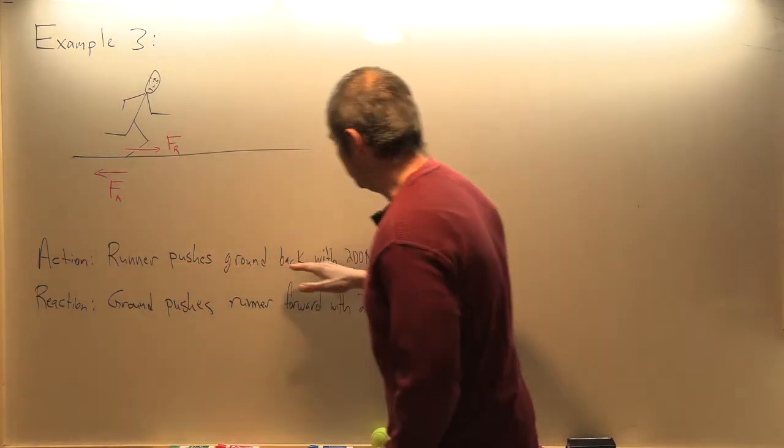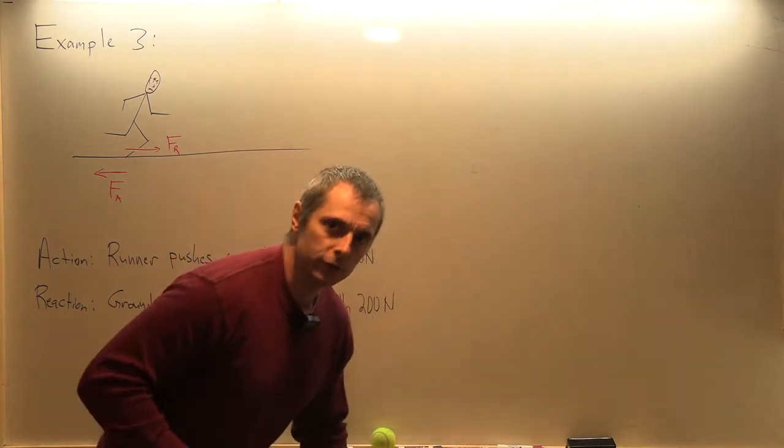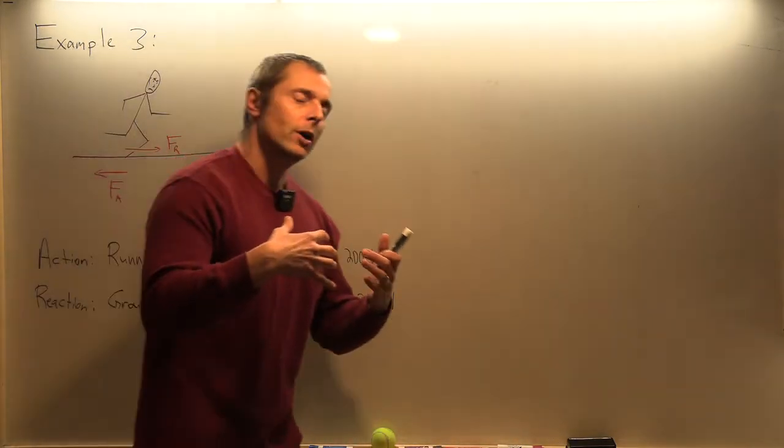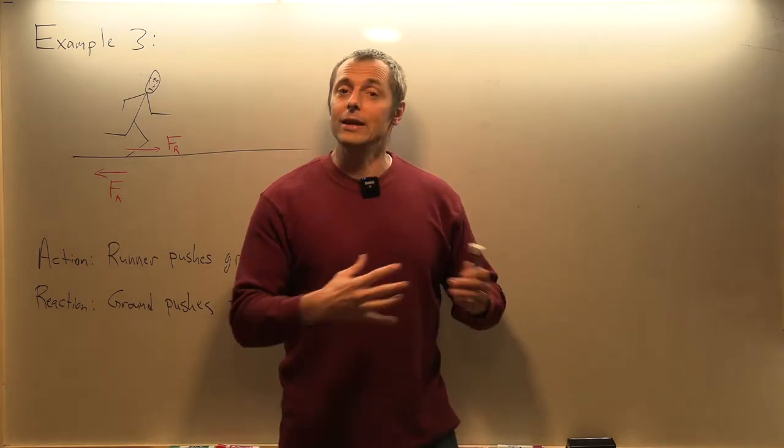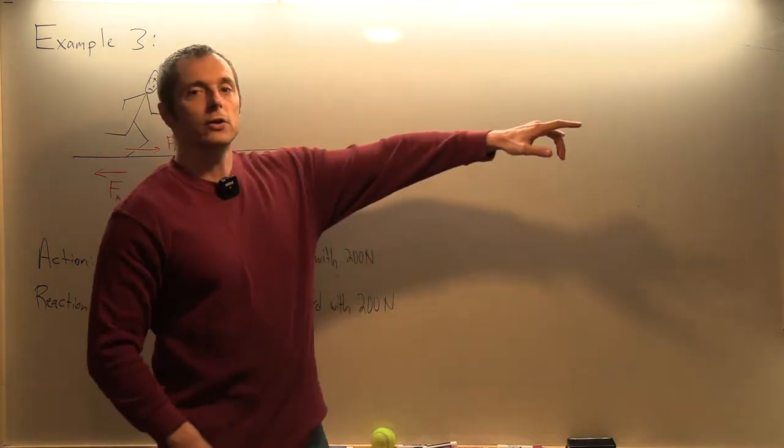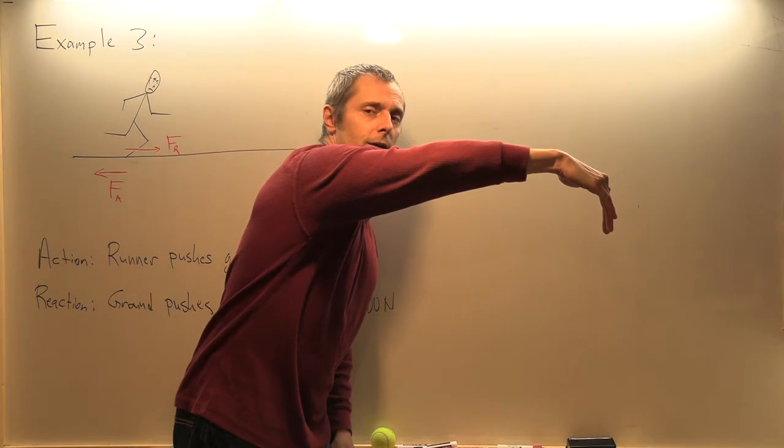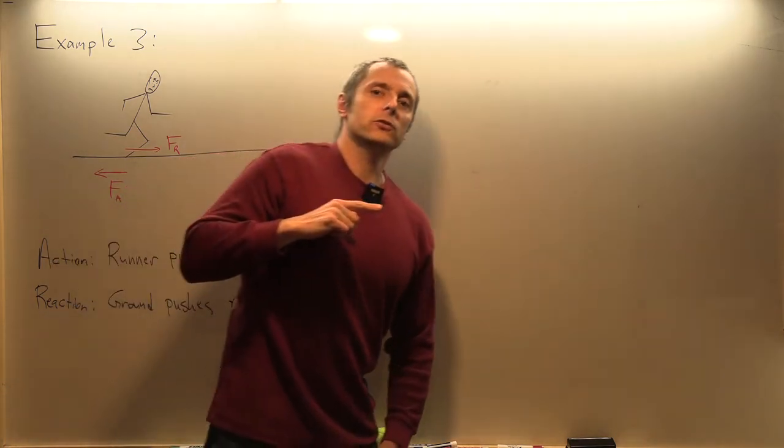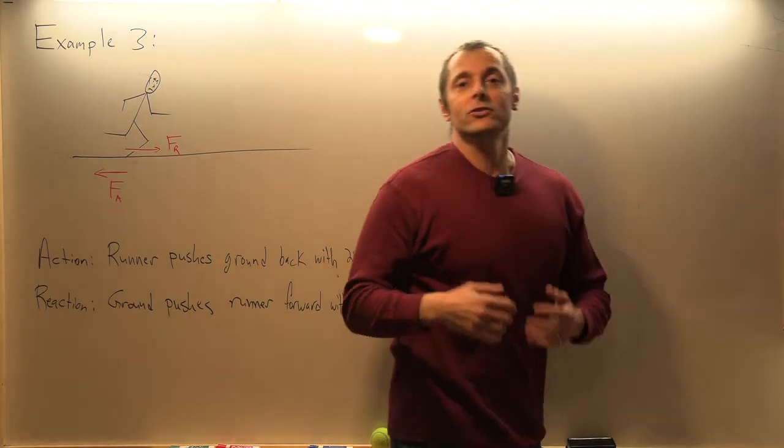Let's call that F action. The reaction goes forward on the runner. So the action will be runner pushes ground back with, let's say, 200 Newtons. What's the reaction to that? Ground pushes runner forward with 200 Newtons. Runner pushes ground back so the ground pushes the runner forward. You don't even think about it. You put your leg behind you and you push back and you go forward. Your deep subconscious mind, without even thinking of it, knows Newton's third law and how to manipulate to create the forces it needs to. Same thing when you're swimming.